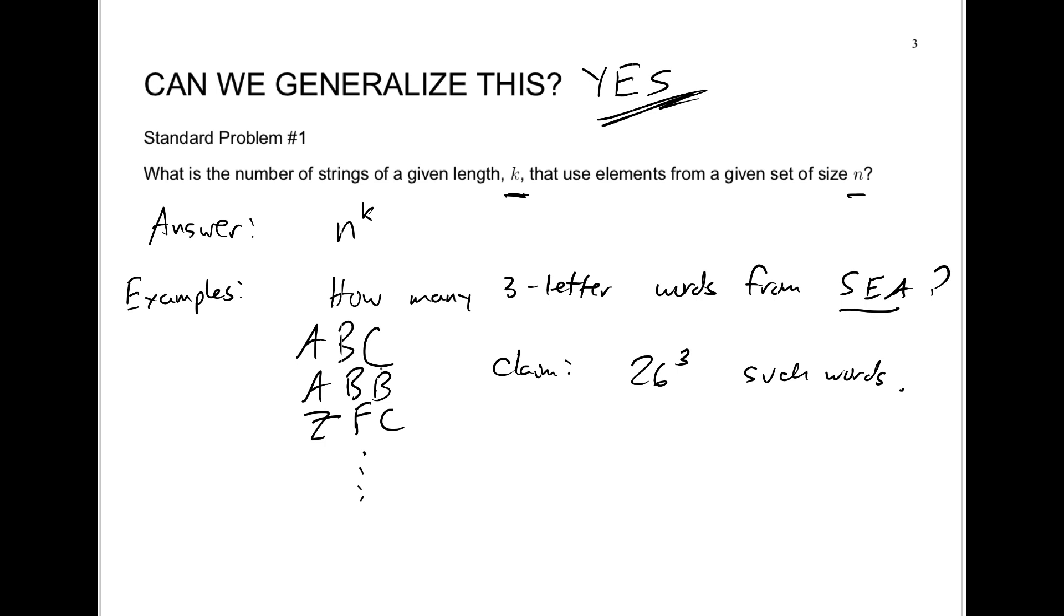Now, why is that? Well, the same argument we gave before kind of works. Essentially, we have 26 ways to choose the first letter. And regardless of what we did there, we have 26 ways to choose the second letter and 26 ways to choose the third letter. Well, how does that give us 26 cubed total words?